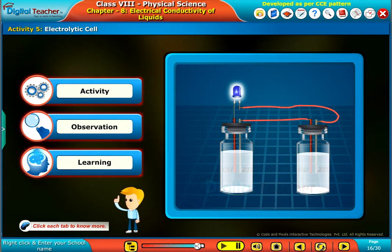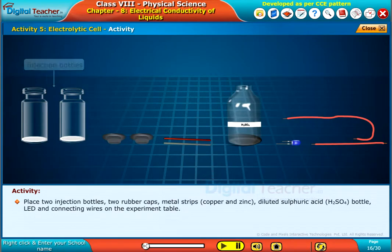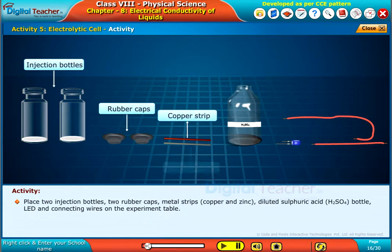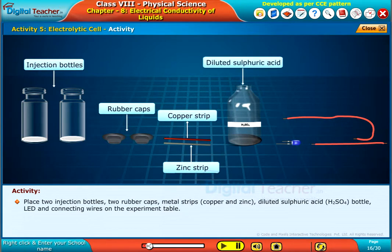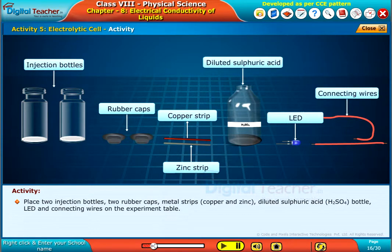Click each tab to know more. Place two injection bottles, two rubber caps, metal strips copper and zinc, diluted sulfuric acid H2SO4 bottle, LED and connecting wires on the experiment table.